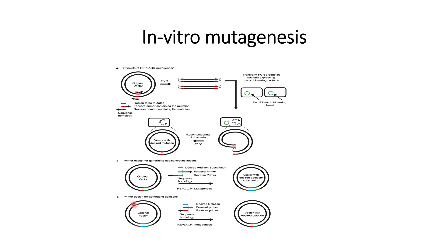A similar strategy is used for the deletion of any sequence within the original vector. In this case, the forward and reverse primers are designed in such a way that the deletion sequence falls between them. The forward primer is designed in the green region and the reverse primer in the red region, so the PCR product does not include the blue region — that is the desired deletion.